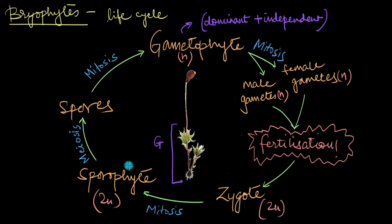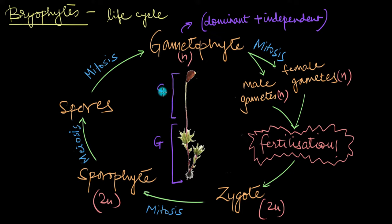This sporophyte is short-lived, barely noticeable, and heavily dependent on the gametophyte for pretty much everything — food, shelter, water, everything. It gets all of these things by staying attached to the gametophyte. This long stalk-like thing that you can see is the sporophyte.